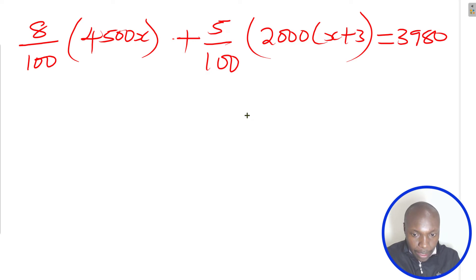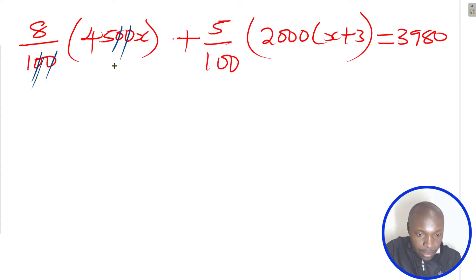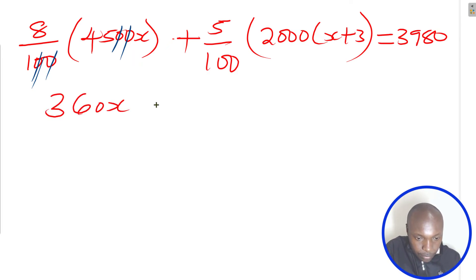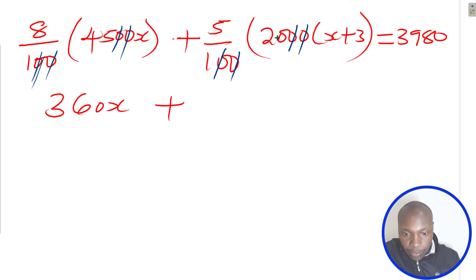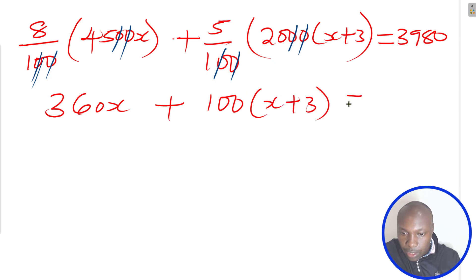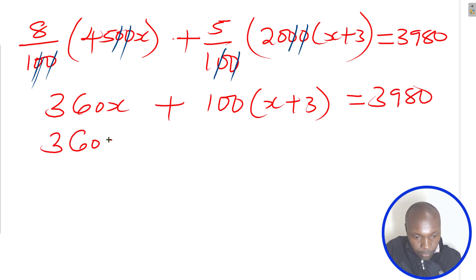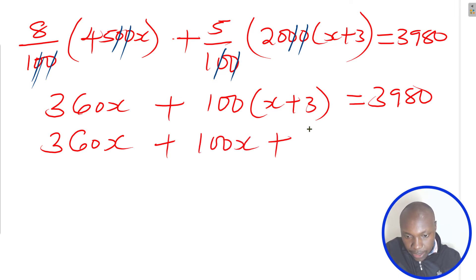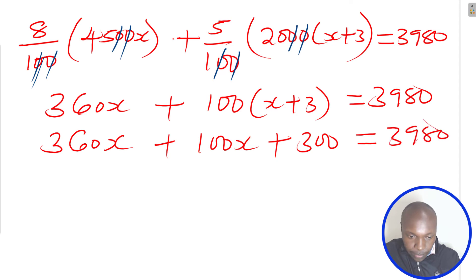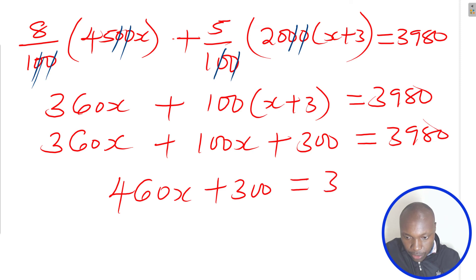Now let us simplify this. When you cancel the zeros, 8 multiplied by 45x gives 360x. Then for the chairs, 5 times 20 gives 100, so you have 100 times (x plus 3), which equals 100x plus 300. So the equation becomes: 360x plus 100x plus 300 equals 3,980. Collecting like terms, 360x plus 100x gives 460x, so 460x plus 300 equals 3,980.